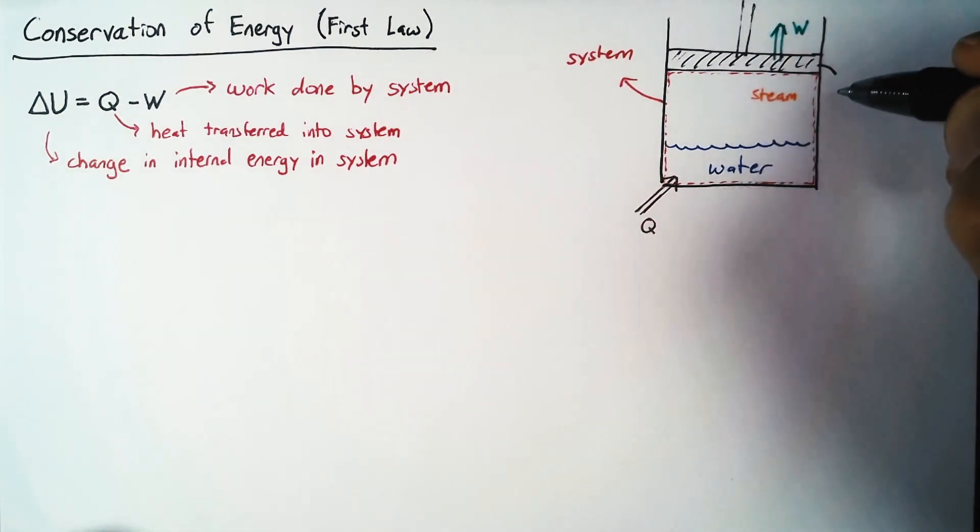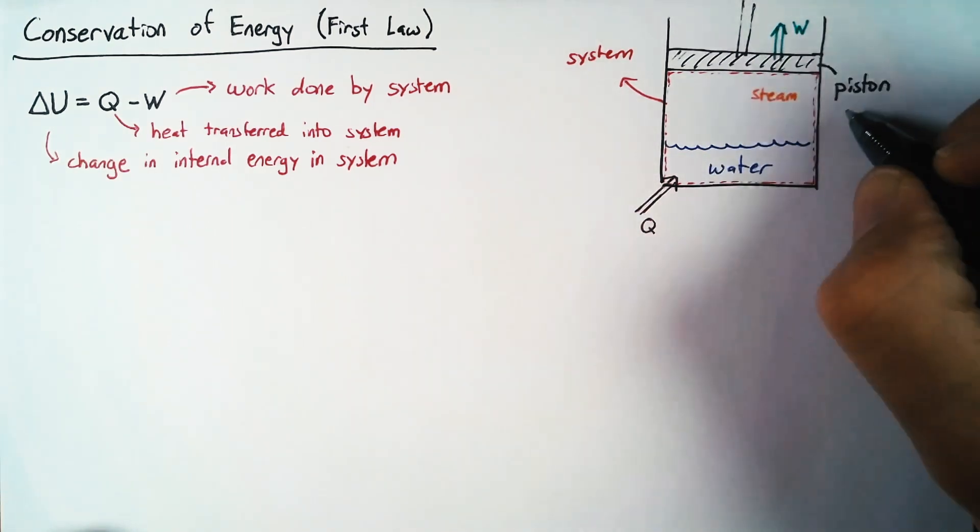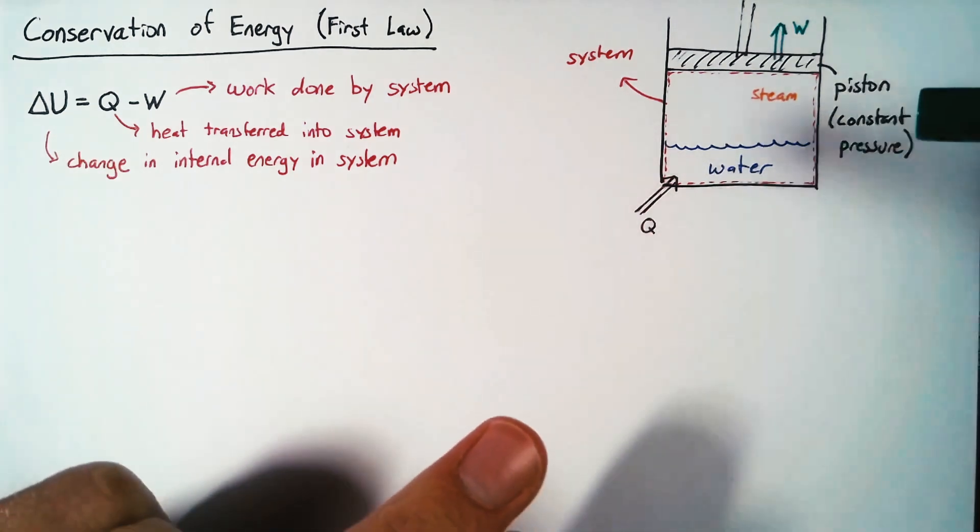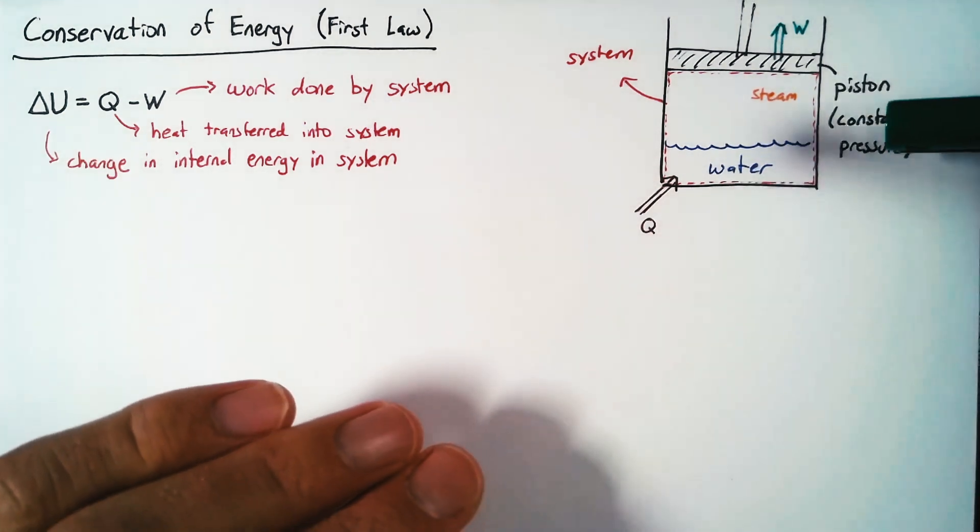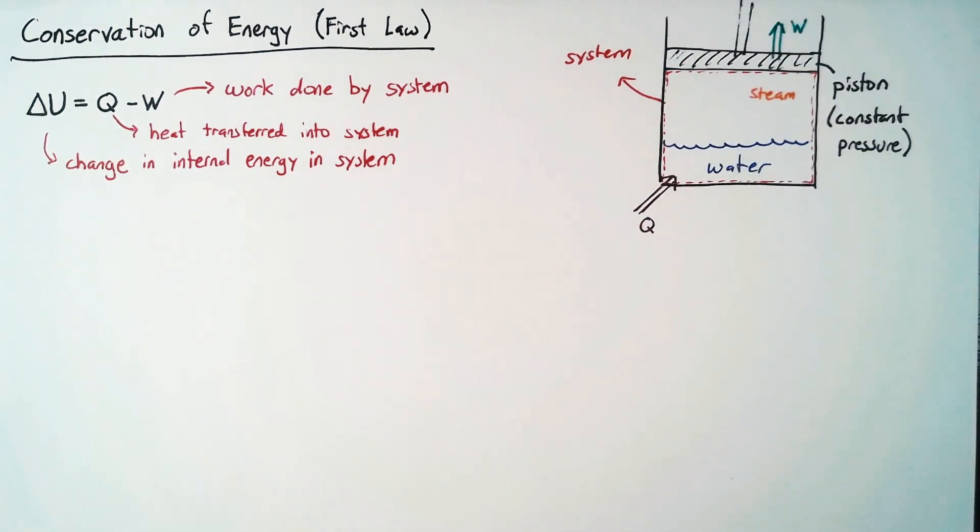Now, one thing we can do with our piston here is make it so that it exerts a constant force downward onto our system. And if we have a constant force with a constant area, that means that we have a constant pressure.